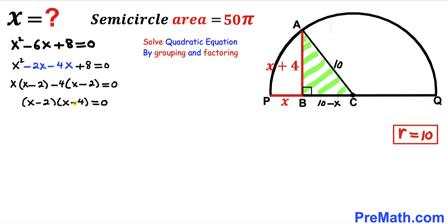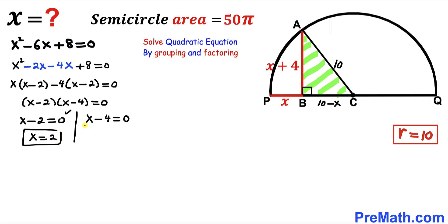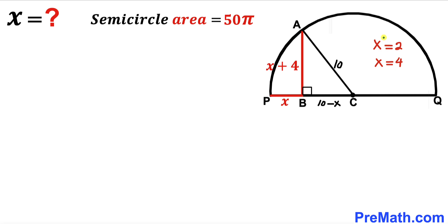Setting each factor equal to zero: x − 2 = 0 gives x = 2, and x − 4 = 0 gives x = 4. So we have two values of x: the first is 2 and the other is 4.